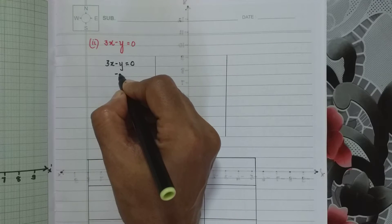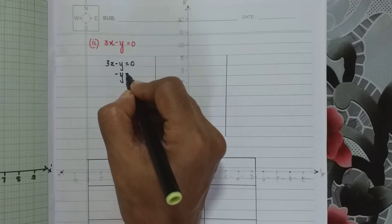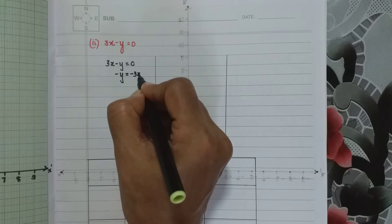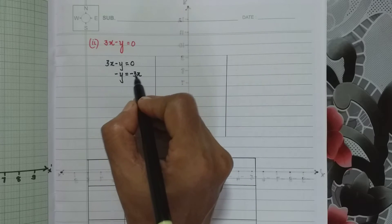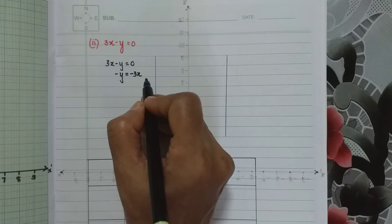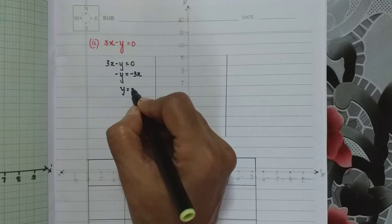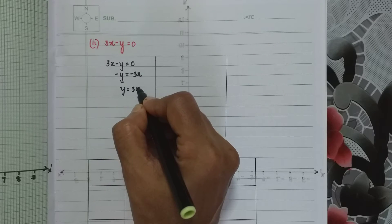So what happens? We have here minus y equals minus 3x. Now since both are minus, if we multiply with minus on both sides, it becomes y equals 3x.